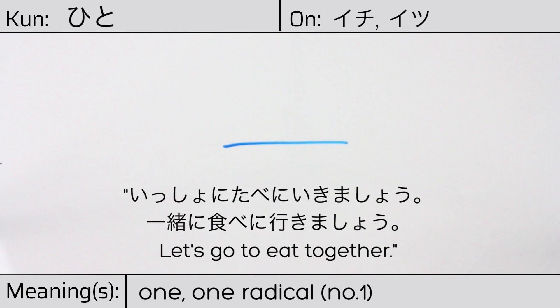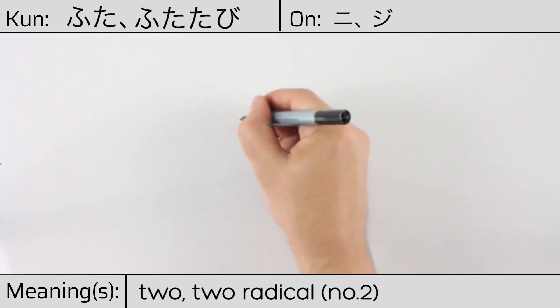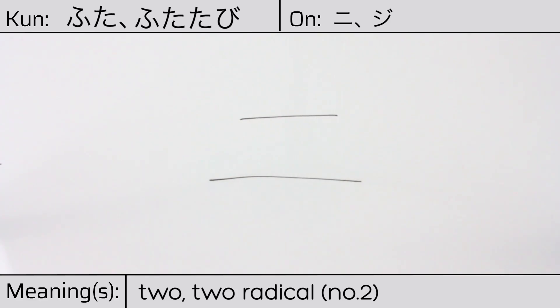This kanji has kunyomi or Japanese readings of futa or futatabi, and it has onyomi or Chinese readings of ni or ji. This character has the meanings two or the two radical. Here is the stroke order. This character has no radicals, but is itself a radical in other composite kanji. You can remember this kanji by the fact that it is two lines, meaning two.